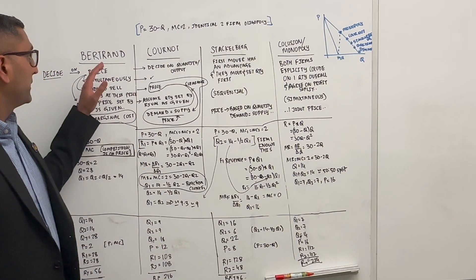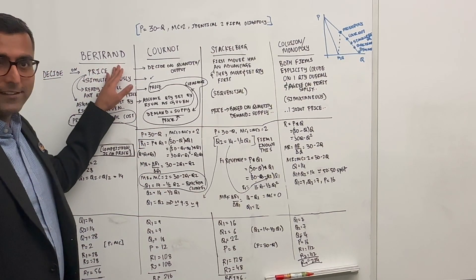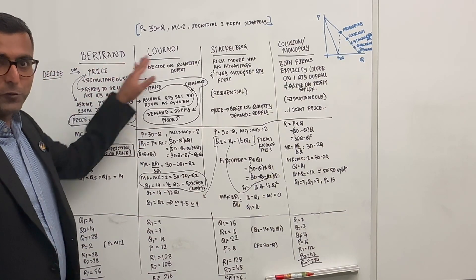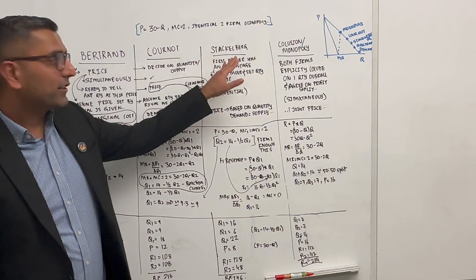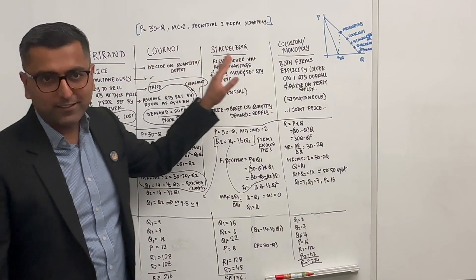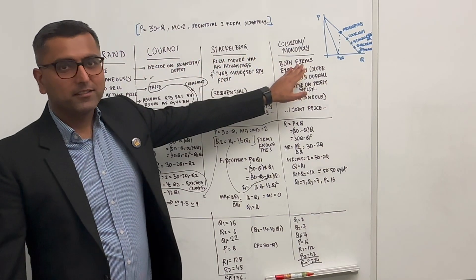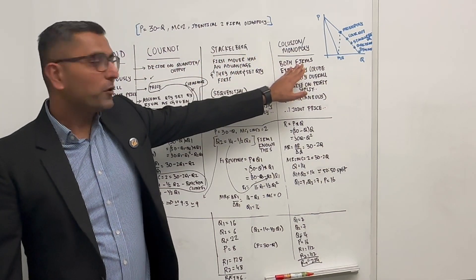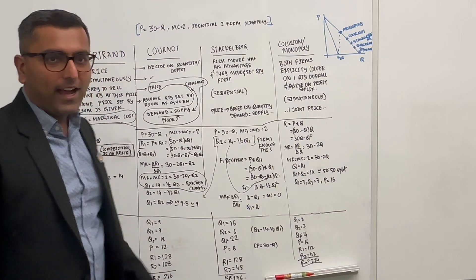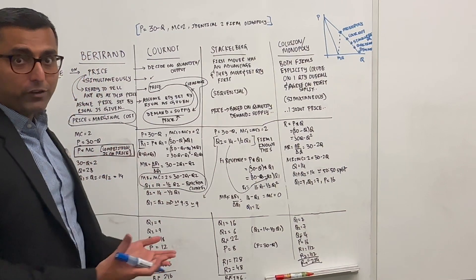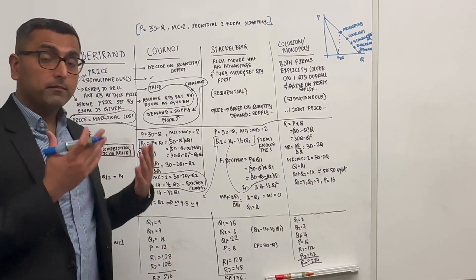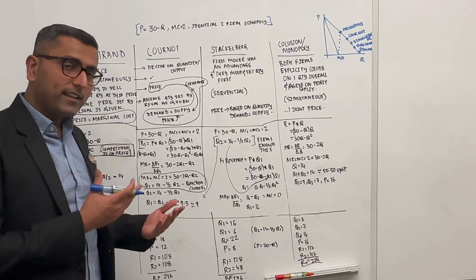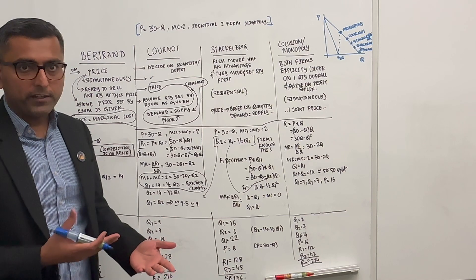Let's learn about Bertrand, Cournot, Stackelberg, and collusion-based monopoly, and how they differ when it comes to setting the price and setting the quantity.